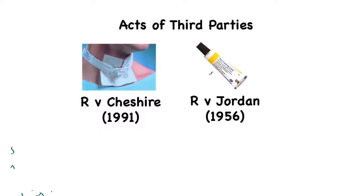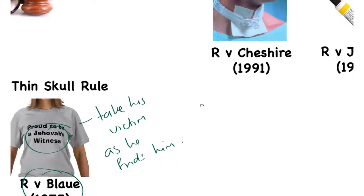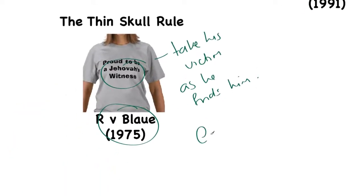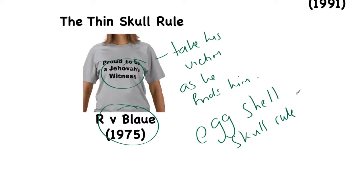The thin skull rule is also called the eggshell skull rule. The reason it's called that is: if you knock a person to the ground who has such a thin skull and their skull breaks, even though you didn't know the skull was that thin, the defendant should be liable. It is not the victim's fault that they were not blessed with a more substantial skull.